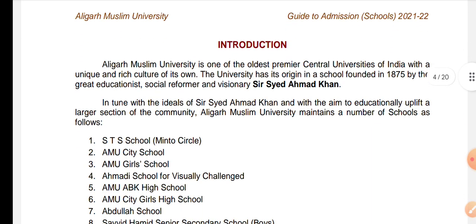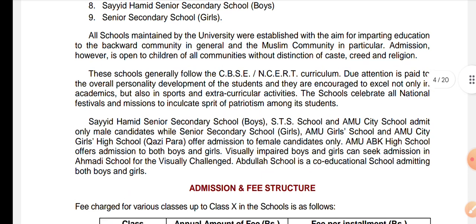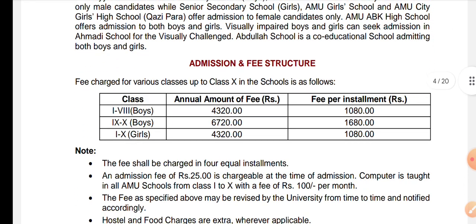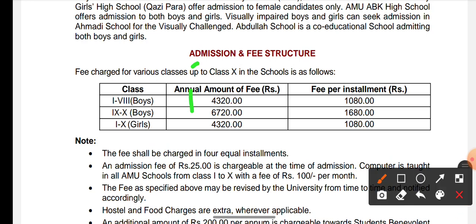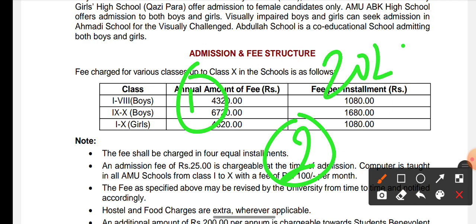First of all, let us talk about the application form and the entrance exam schedule. I want to remind you that the application form and the entrance exam schedule are not yet available. But I will tell you about the expected dates. The AMU application form and entrance exam schedule will be released — it may be before or after the university entrance exam. Last time, in 2020, it was after the university entrance exam, and the exam was in December.